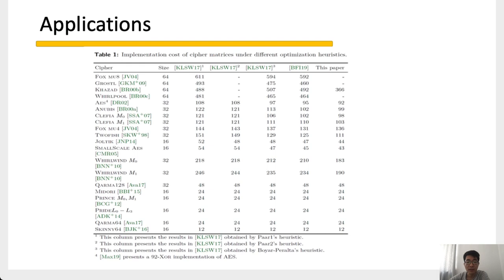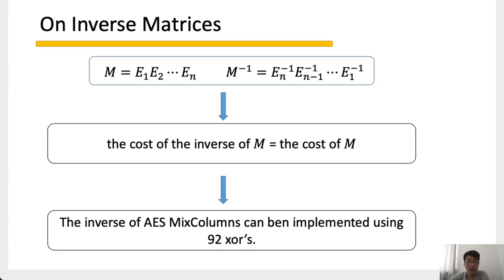This table shows the applications of our search algorithm. Our algorithm finds better implementations for most cases. Particularly, the cost of AES MixColumns is 92 SXORs. Since our algorithm is based on matrix decomposition, we can easily verify that if M is decomposed as N type-3 matrices, the inverse of M can also be decomposed as N type-3 matrices—so the cost of a matrix and its inverse are equal. As a direct application, we can implement the inverse AES MixColumns with 92 SXORs as well. That's all, thank you.